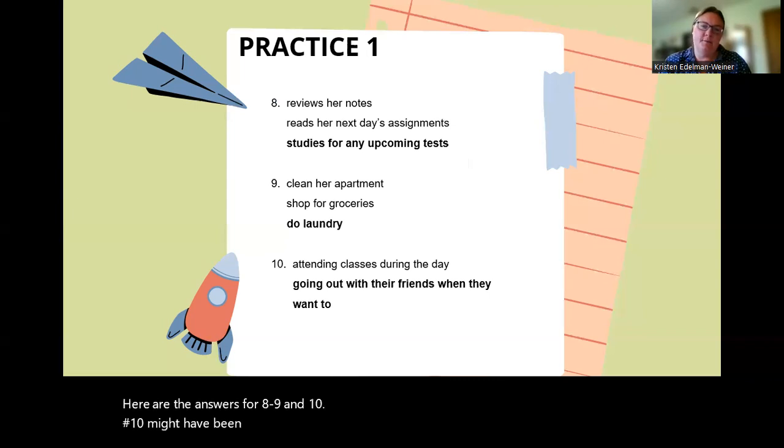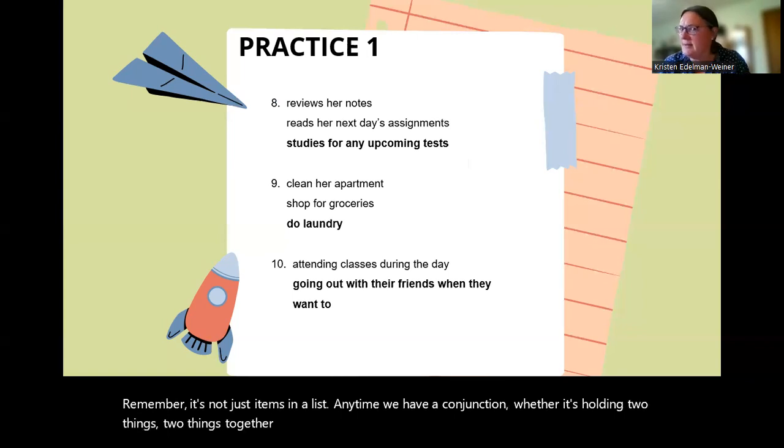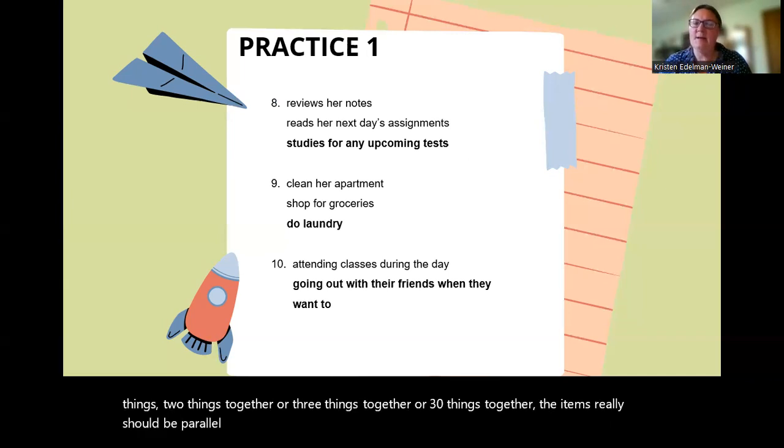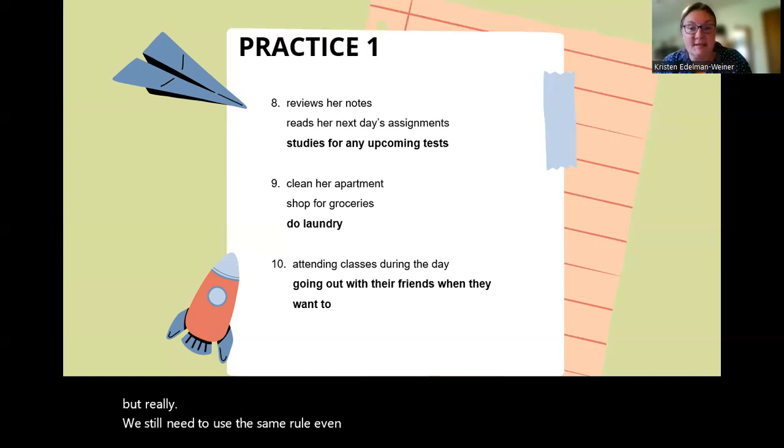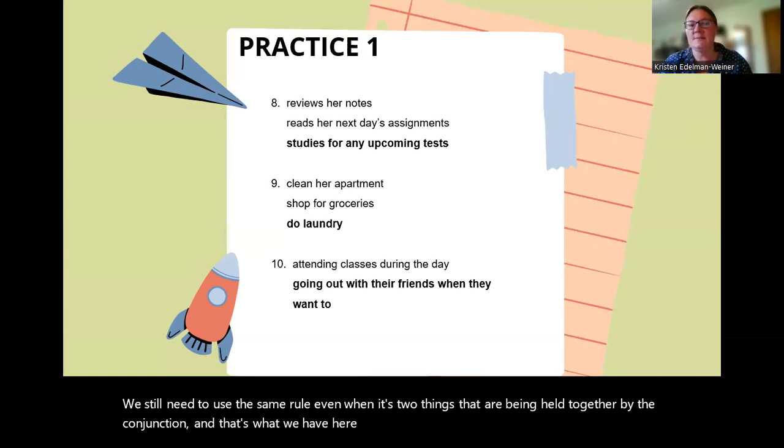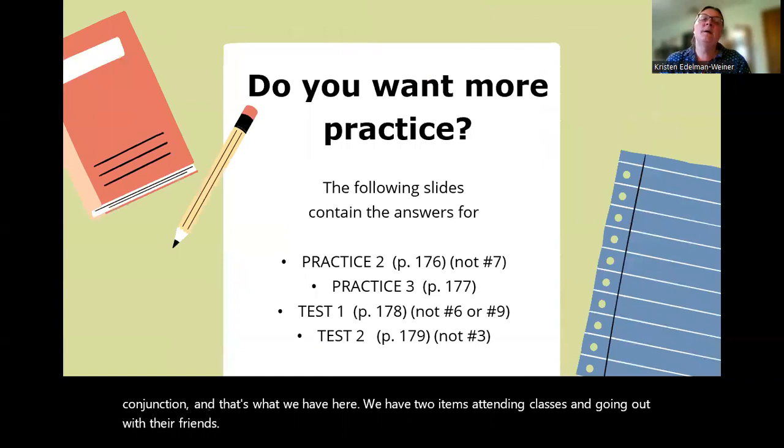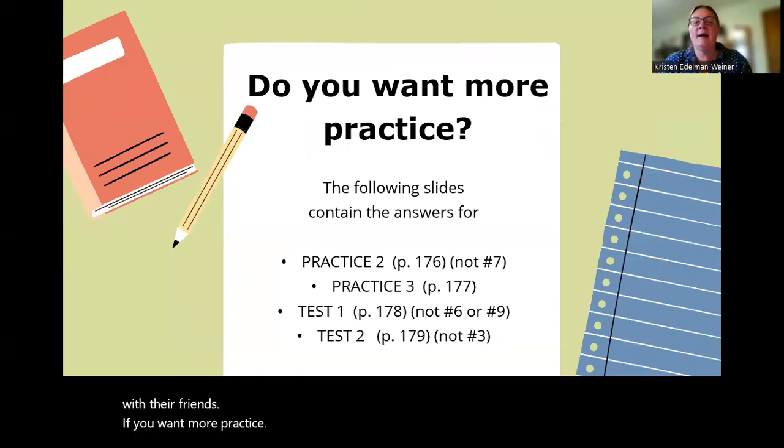Number ten might have been tricky. Remember, it's not just items in a list. Anytime we have a conjunction, whether it's holding two things together or three things together or thirty things together, the items really should be parallel. They should be the same. So in number ten, you might have been looking for three things, but really we still need to use the same rule even when it's two things that are being held together by the conjunction 'and.' That's what we have here. We have two items: attending classes and going out with their friends.